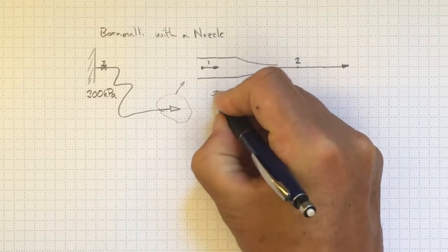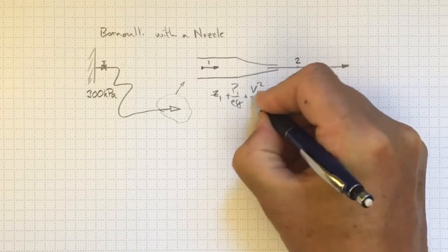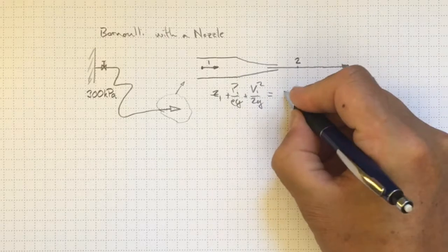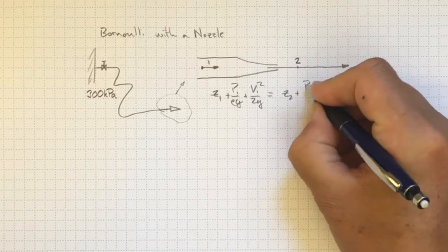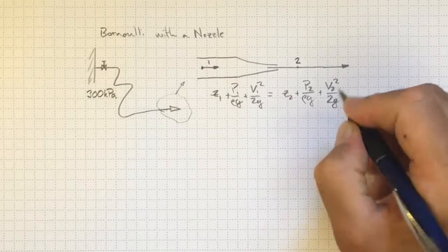So z1 plus p1 over rho g plus v1 squared over 2g must be equal to z2 plus p2 over rho g plus v2 squared over 2g.